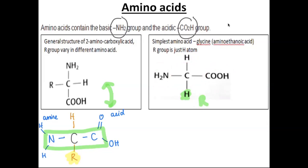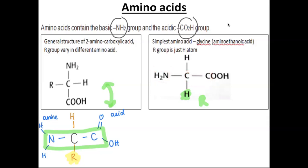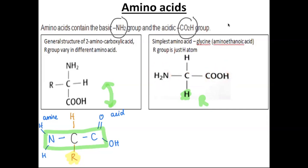If we name it based on the nomenclature rules, this is called amino ethanoic acid, because there are two carbons — therefore it's ethanoic acid — but because there's an amine group, it's called amino ethanoic acid. There is no specific rule to draw your nitrogen N-terminal or amine group on the left side and your C-terminal, which is the acid group, on the right side. Sometimes textbooks refer to the amine group as the N-terminal and the carbon of the COOH as the C-terminal.